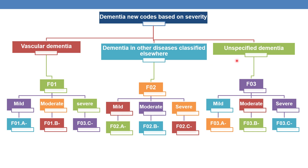Finally, coming to unspecified dementia: mild unspecified dementia is given by subcategory F03.A, moderate unspecified dementia is indicated by F03.B, and severe unspecified dementia is indicated by F03.C. These are the subcategories of the new codes, and all codes are further expandable.